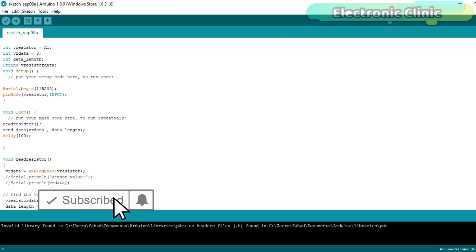In the void setup function I activated the serial communication. This is the default baud rate of the REYAX LoRa module. You can easily change this baud rate using the AT commands which I have already explained in my previous tutorial. The variable resistor is set as the input device. Then starts the void loop function.